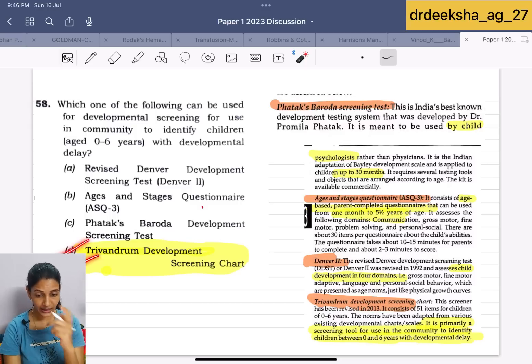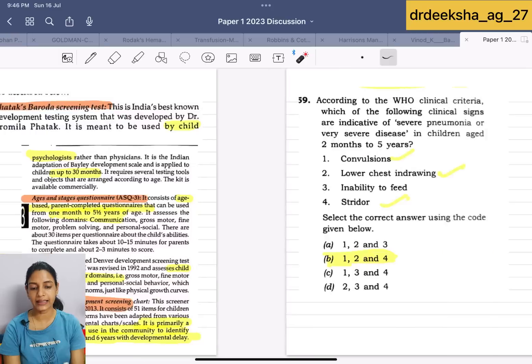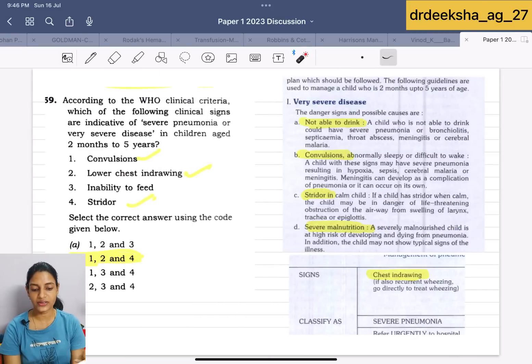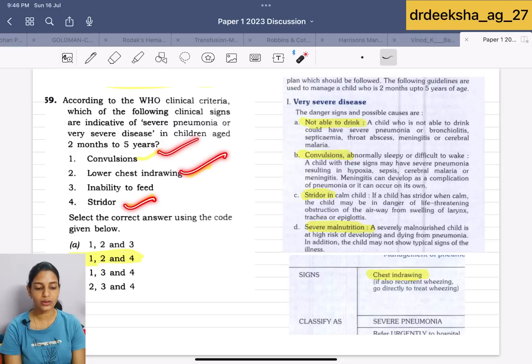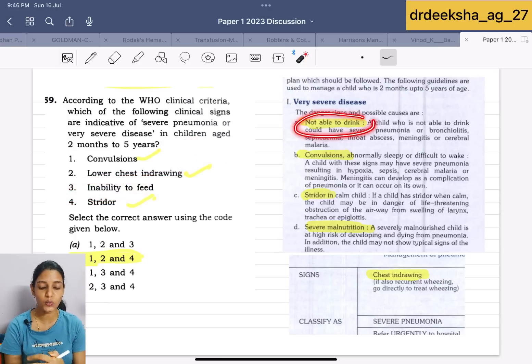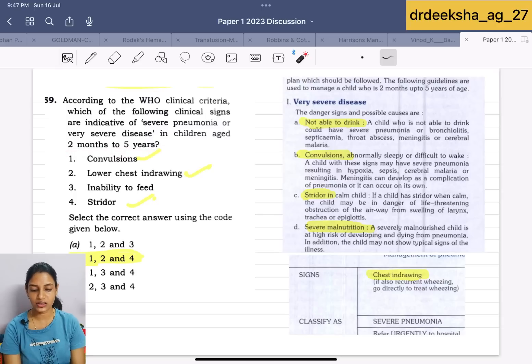Next question they are saying is which of the following WHO clinical criteria are indicative of severe pneumonia. Convulsion, lower chest in-drawing, stridor. Why inability to feed is not there? If there is not able to drink for the age of 2 month to 5 year. If we talk about less than 2 month, then inability to feed would be true. Answer for this is 1, 2 and 4.